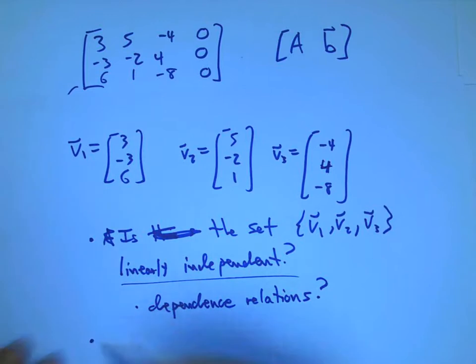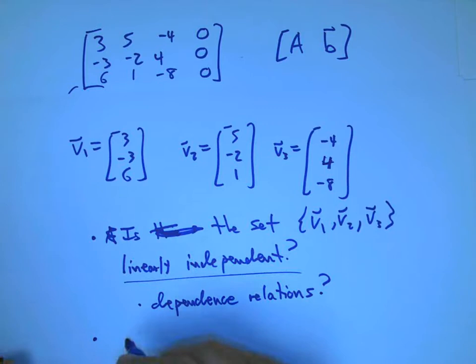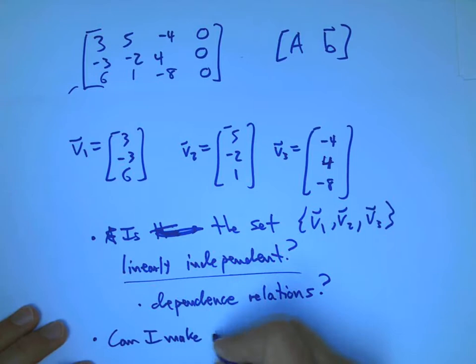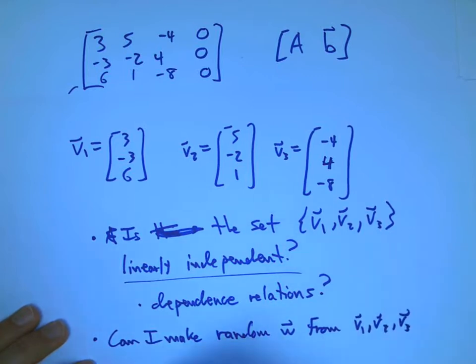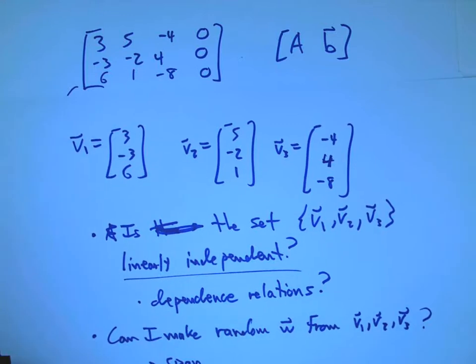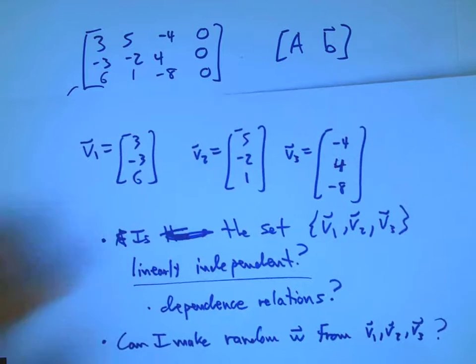And then another question we got to toward the end of class time was, can I make some other random vector W from V1, V2, V3? That's called taking the span of the set and looking at all the vectors I can make out of those. Okay, so let's look at, sort of focus on the first question first, linear independence.